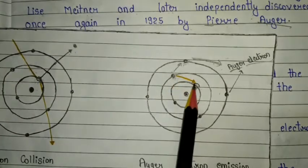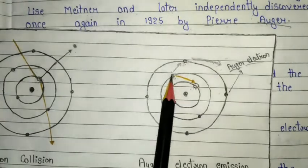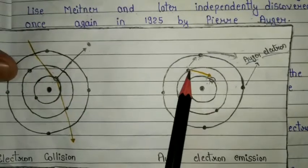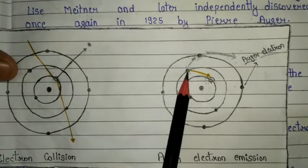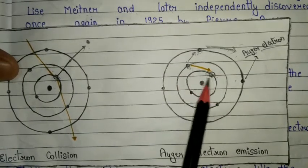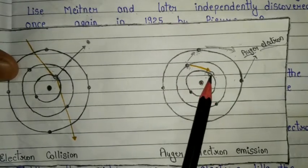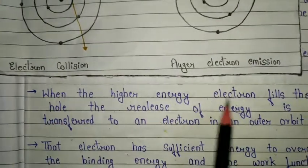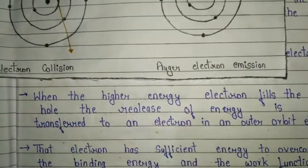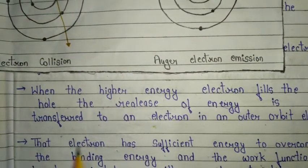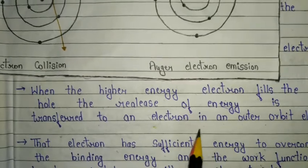This vacancy must be refilled by an electron from a higher energy level. So basically, an electron from a higher energy level will come down to fill the vacancy.